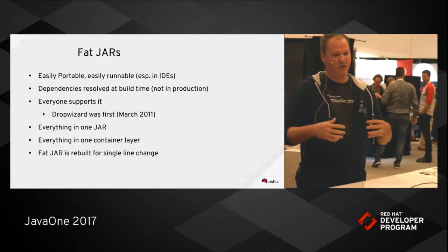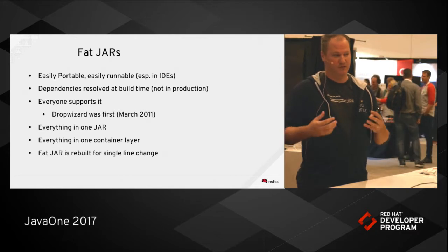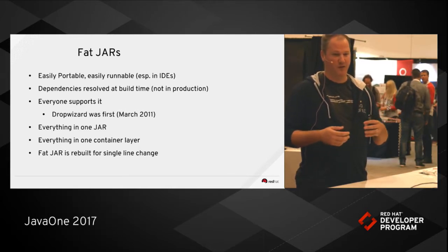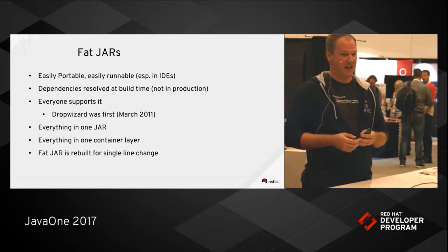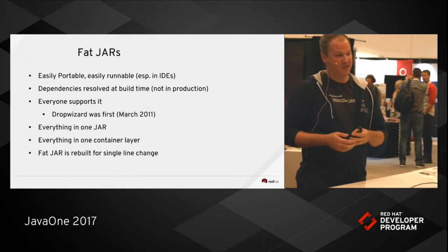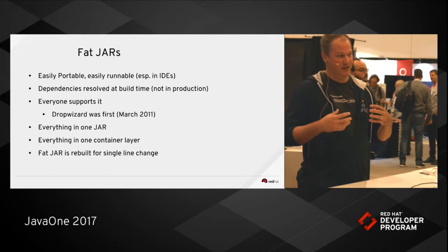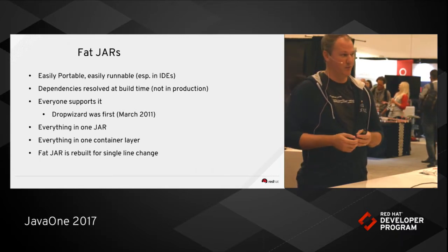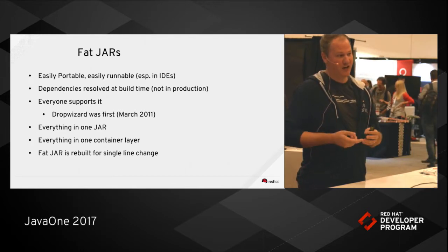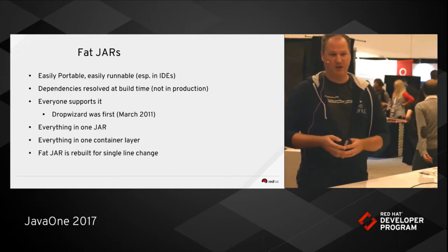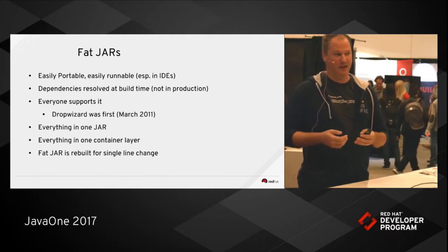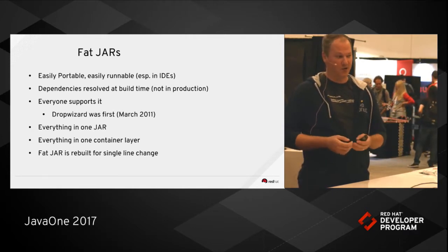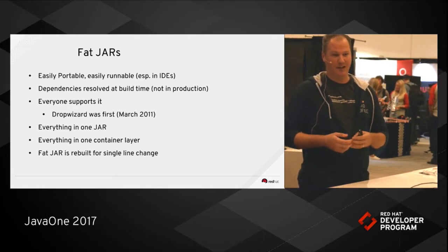Essentially everything is packaged in a single jar. All your dependencies are resolved at build time so that at runtime you have no resolution required. It starts up relatively quickly and you can't run into problems where a jar file or dependency is missing at runtime — that's the last thing you want in production. If you're using Linux containers like Docker, everything in the fat jar is in a single container layer. When you change one line of code in your 200MB fat jar, the entire 200MB gets recreated and re-added to the Docker layer — all 200MB are transferred over the network and stored in S3, reflected in your AWS bill.